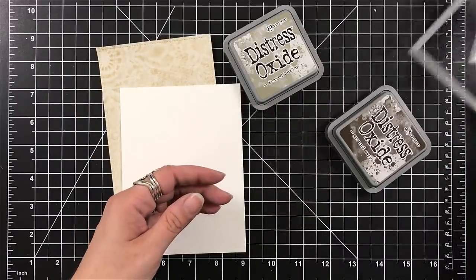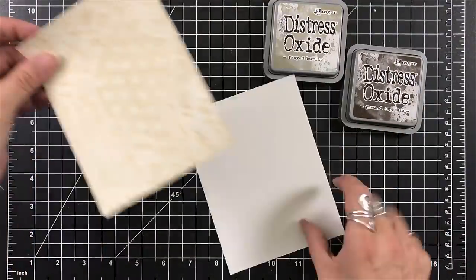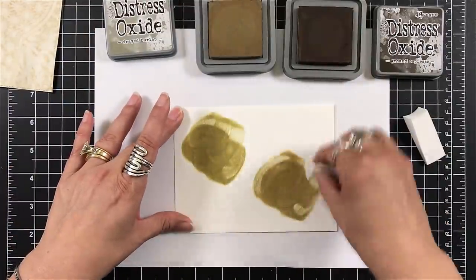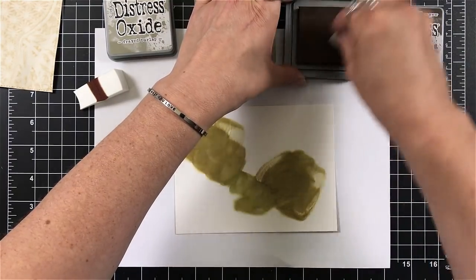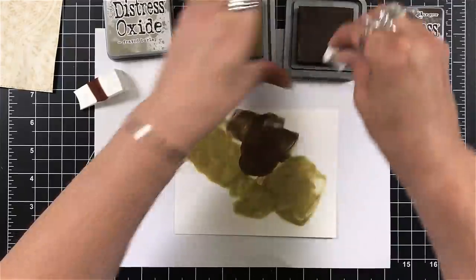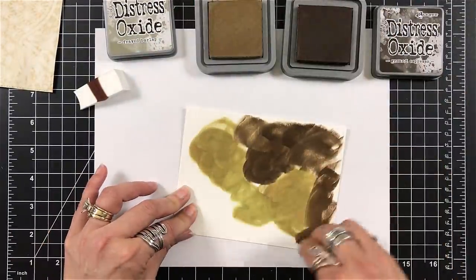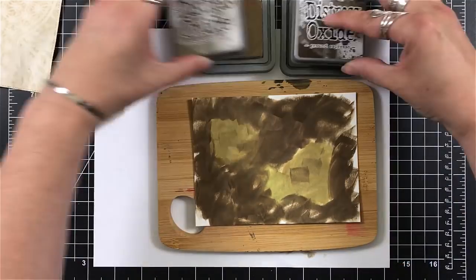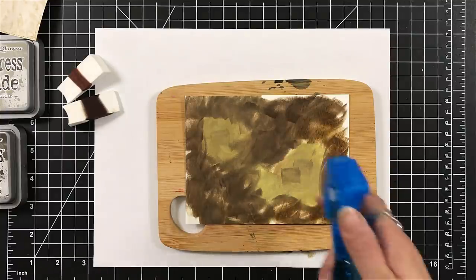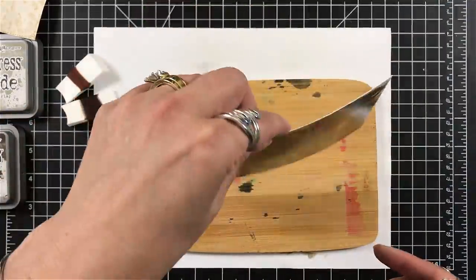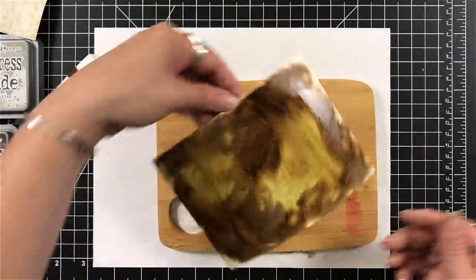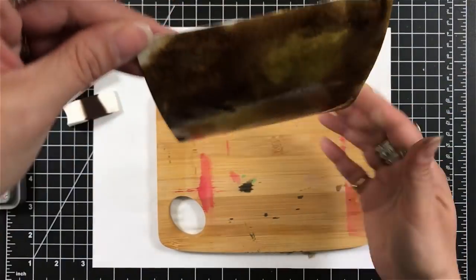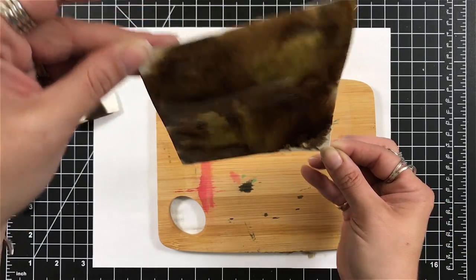So for card number two, of course I had to play with the fancy die that comes with it. I had to play with the coffee and tea dyed papers. And of course we all knew my oxides were coming in. So I grabbed a piece of Bristol card stock and I'm using ground espresso and frayed burlap. And I just grabbed a couple of makeup sponges because I couldn't get to my mini ink blenders. They were buried.